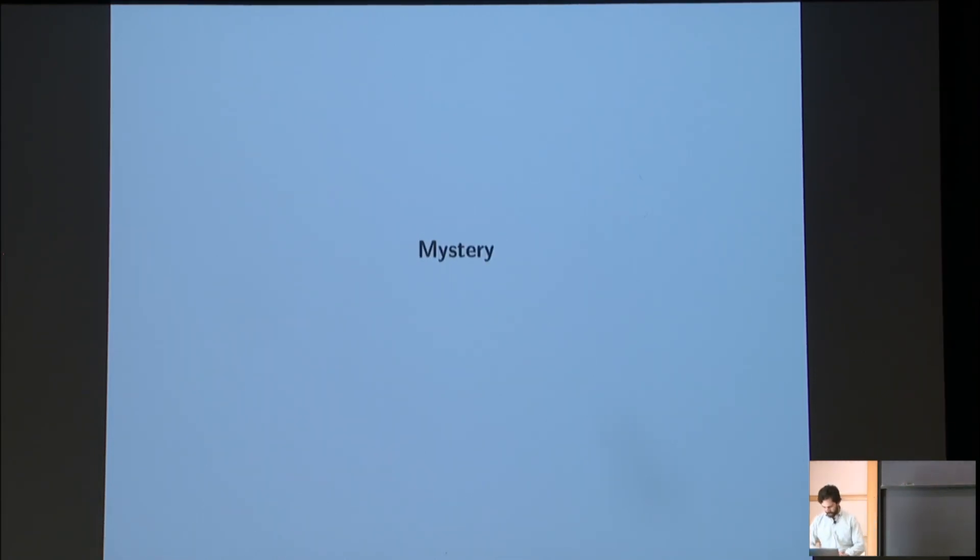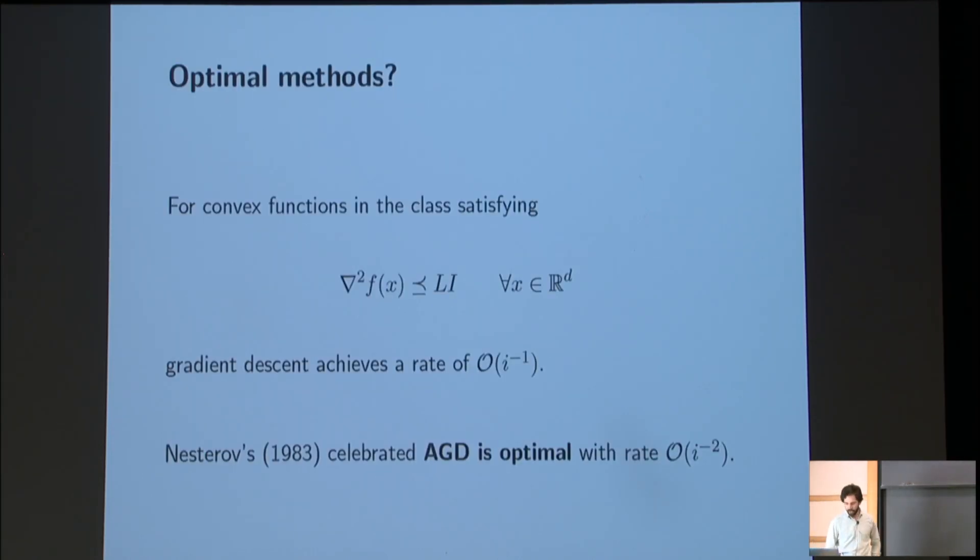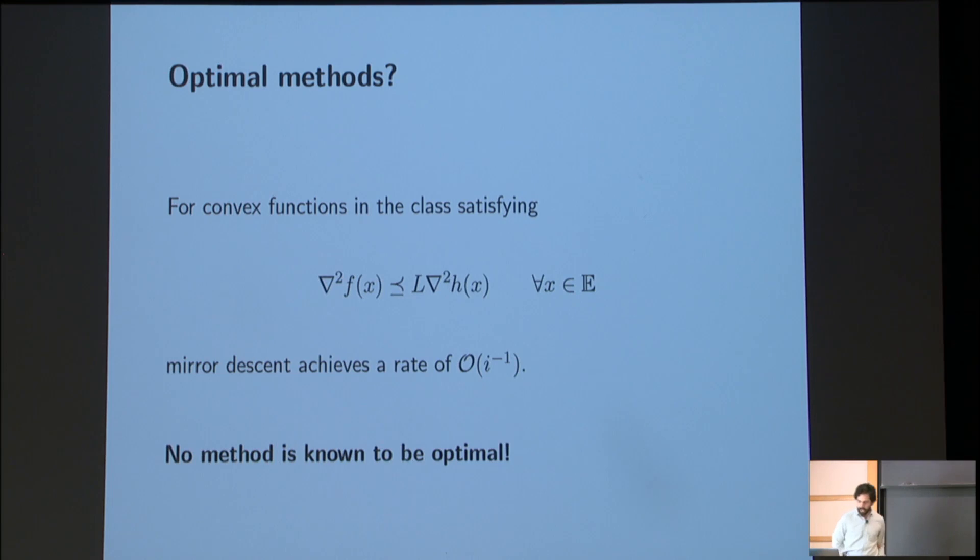OK. So now I can frame the sort of mystery at the core of all of this. For convex functions satisfying the smoothness condition, gradient descent achieves a rate of 1 over i. And Nesterov's celebrated accelerated gradient descent is optimal within that class with a rate of 1 over i squared. For convex functions in the class satisfying this inequality for some reference function h, the mirror descent algorithm achieves a rate of 1 over i. This is what Baushke, Bolte, Teboulle showed. But there's no method that is known to be optimal. Obviously, if this is a quadratic, then Nesterov's is optimal. But in the more general class, relative to this, your choice of function h, there's no method that is known to be optimal.